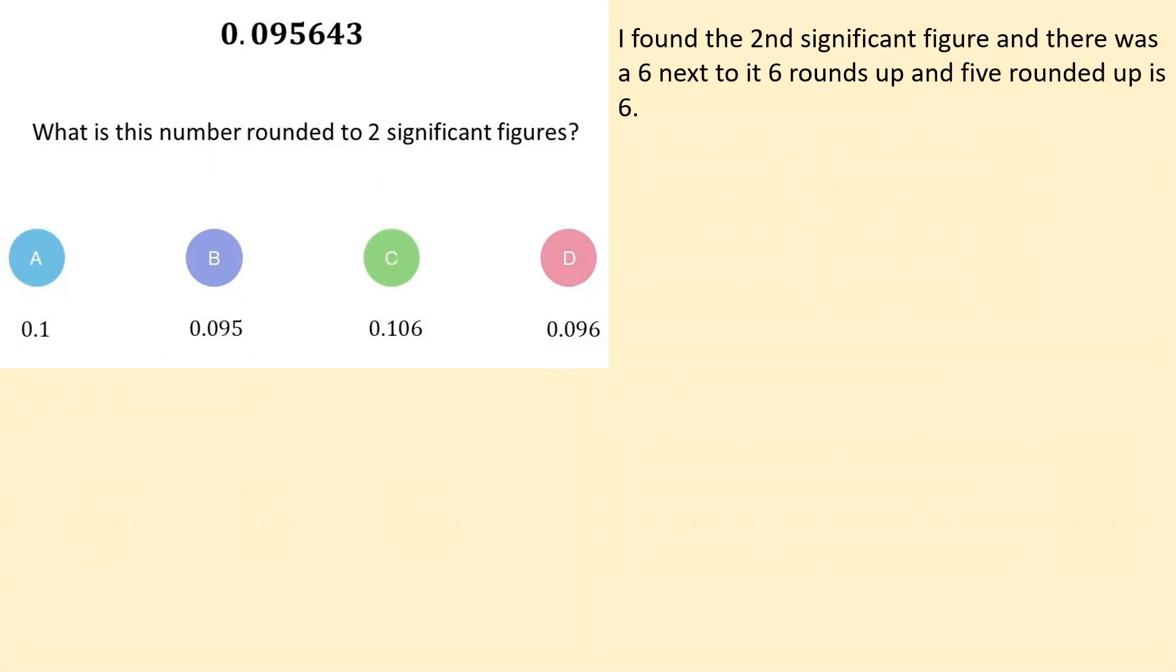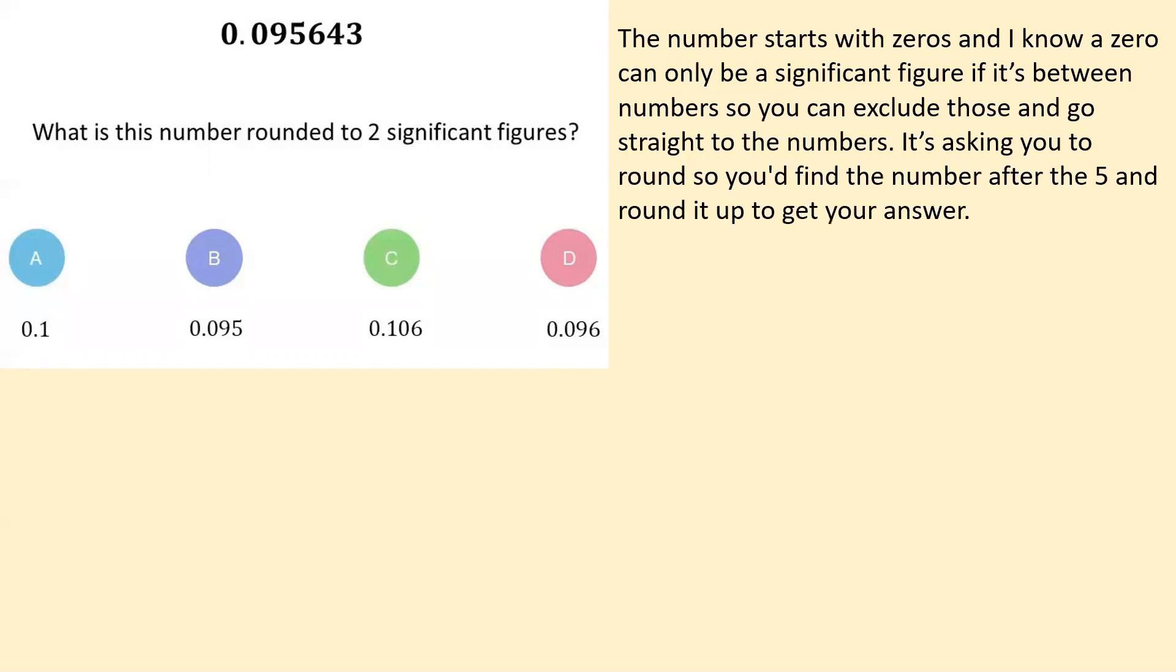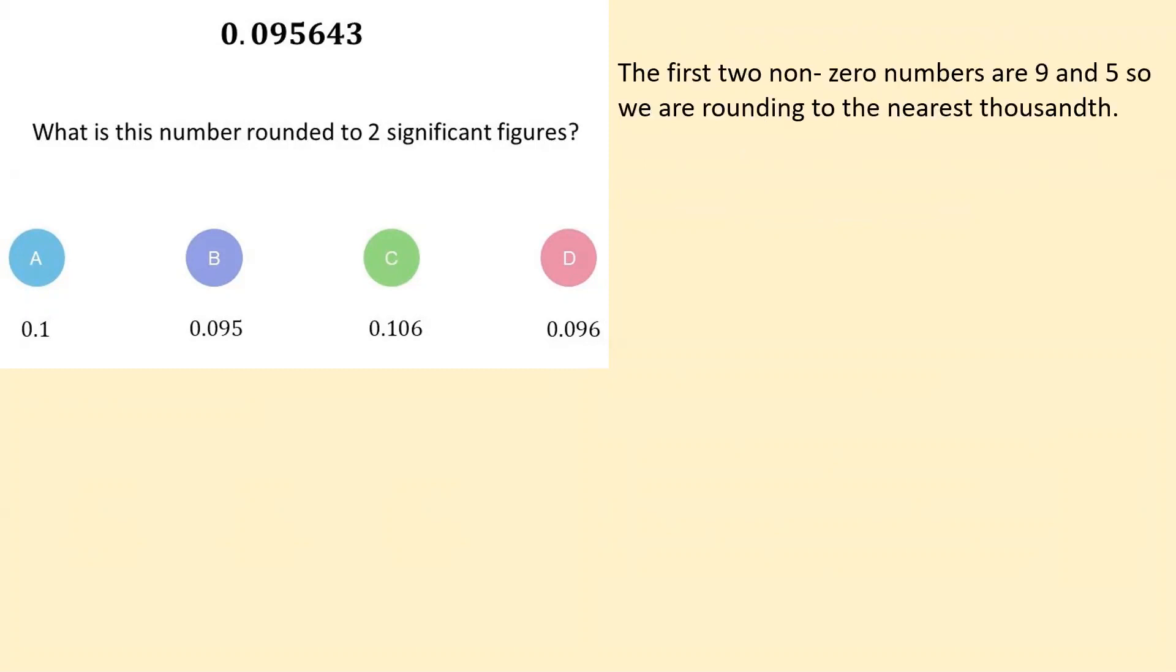So one person said they found the second significant figure and there was a six next to it. So that must mean they think that the five is the second significant figure. It rounds up. So the five rounds up to six. So that's why they chose 0.096. Another comment here. Number starts with zeros. And I know a zero can only be significant if it's between numbers, by which they mean between non-zero numbers. So you can exclude the first two zeros and go straight to the non-zero figures. And then it's giving same thing about the fives. OK, so we seem to be in agreement at the moment about it being part D. The first two non-zero numbers are nine and five. We're rounding. So we're rounding to the nearest thousandth. So again, we're going with D.